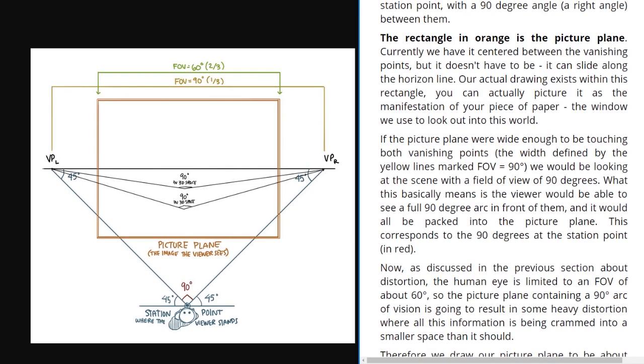The rectangle in orange is the picture plane. Currently, we have it centered between the vanishing points, but it doesn't have to be. It can slide along the horizon line. Our actual drawing exists within this rectangle. You can actually picture it as a manifestation of your piece of paper, the window we used to look out into this world. If the picture plane were wide enough to be touching both vanishing points, the width defined by the yellow lines marked FOV 90 degrees, we would be looking at the scene with a field of view of 90 degrees. What this basically means is the viewer would be able to see a full 90 degree arc in front of them and it would all be packed into the picture plane. This corresponds to the 90 degrees at the station point, which is in red.